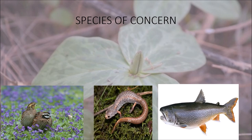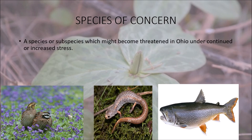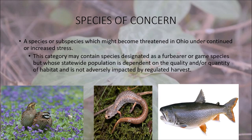The next one is called species of concern — a species or subspecies which might become threatened in Ohio under continual or increased stress, such as habitat destruction or poaching. This category may contain species designated as furbearers or game species whose statewide population is dependent on habitat quality and is not adversely impacted by regulated harvest. Bobwhite quail is a great example — they're still considered a species of concern, but they are legally allowed to be hunted in very selective counties in Ohio with certain bag limits and a season.